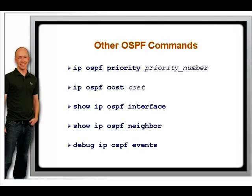Neighbors are formed automatically or can be established through the use of the neighbor command done under the routing process. Sometimes the neighbor adjacency does not form, and the Debug IP OSPF Events command can help you troubleshoot what is going wrong.